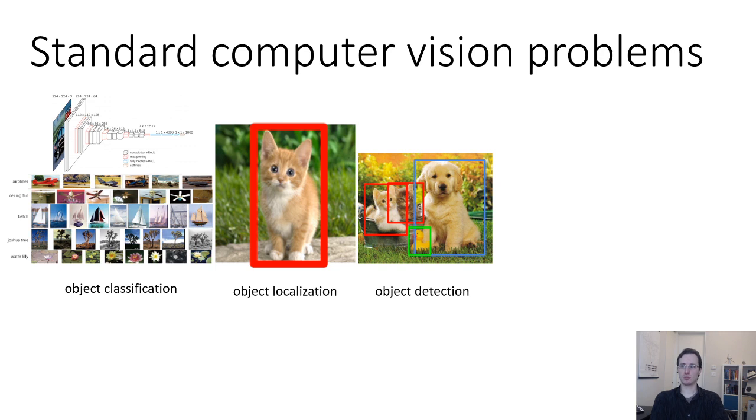A somewhat more sophisticated problem setting is object detection, which is similar to object localization, only it handles the combinatorial nature of the world. The goal in object detection is to output bounding boxes for every object that you know how to recognize in the image. So you're still given a list of classes, just like in object classification, but now instead of predicting one class and one bounding box for each image, you have to actually predict many classes and many bounding boxes for each image corresponding to all the objects that are present. In some sense this problem setting actually makes a lot more sense, because it actually reflects the fact that the real world really is combinatorial, and in most images there are many objects that are present.